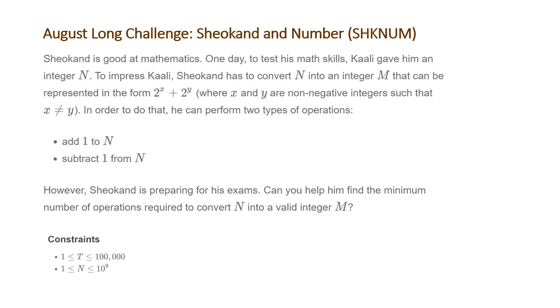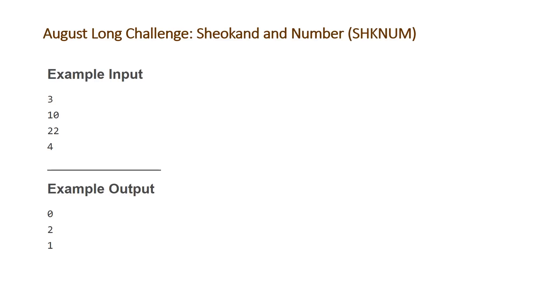Can you help him find the minimum number of operations required to convert n into a valid integer m? The constraints for this problem are that t, the number of test cases, is between 1 and 10 to the 5, and our number n is between 1 and 10 to the 9. So let's take a look at the examples that CodeChef provided.